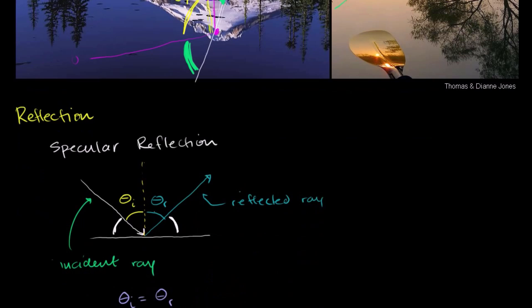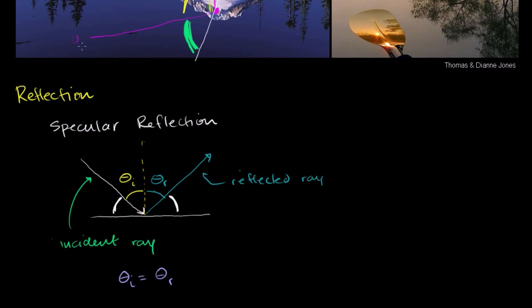Now the other type of reflection is diffuse reflection, and this is the type that may not be as obvious to you, but it's occurring everywhere you look. In diffuse reflection, the surface isn't smooth — it's not what we associate as a mirrored surface.